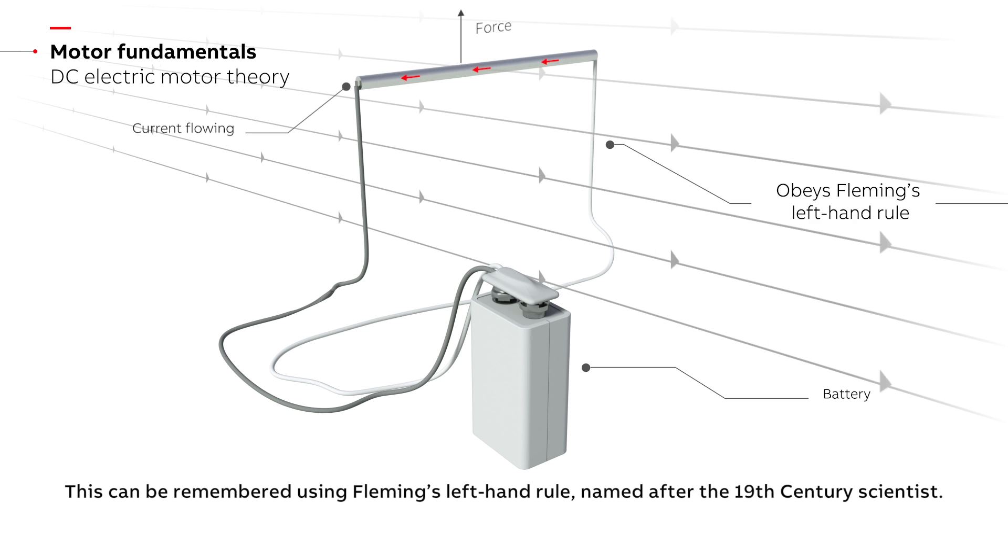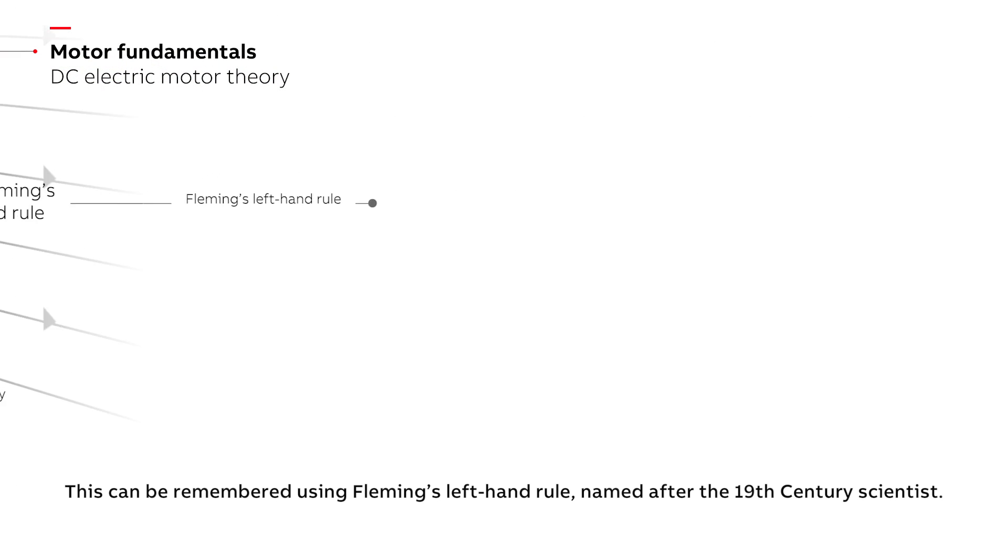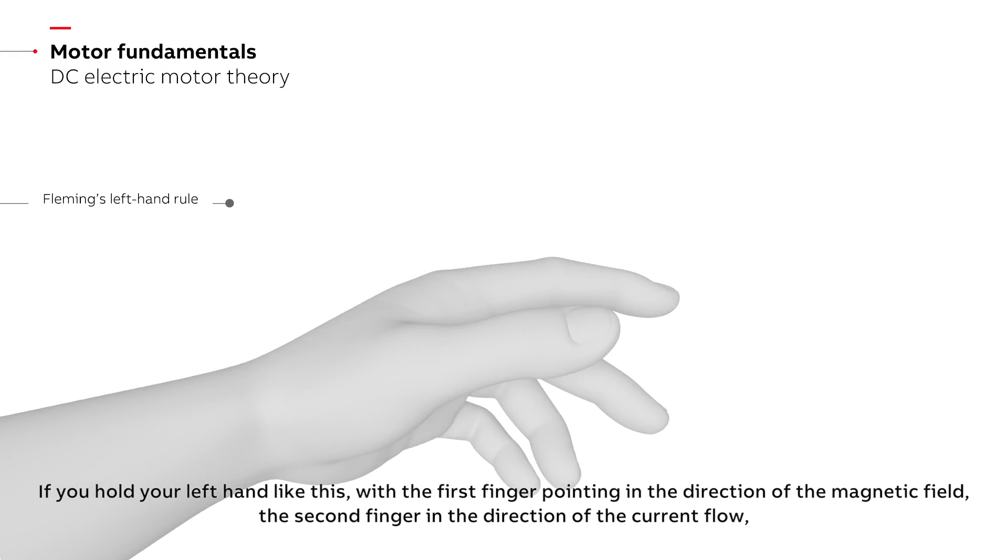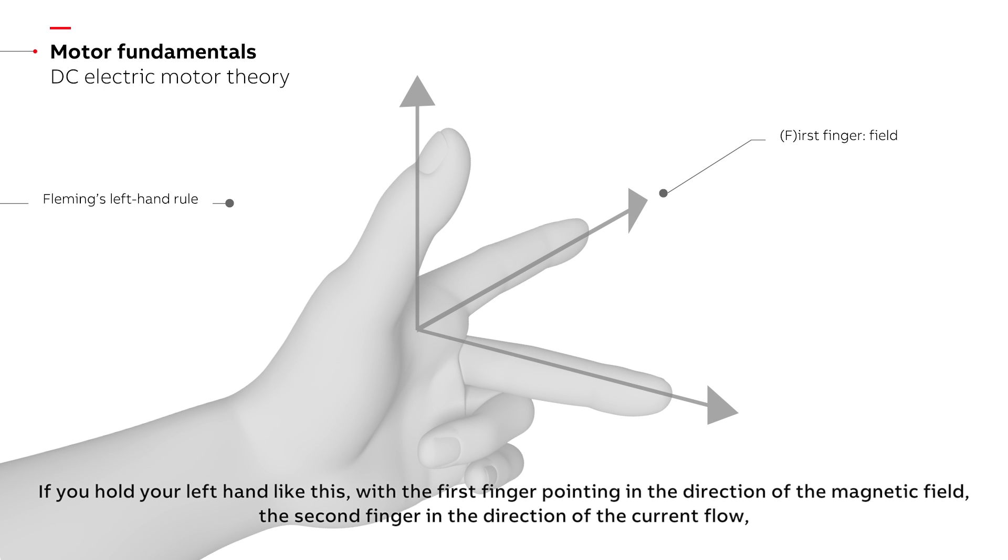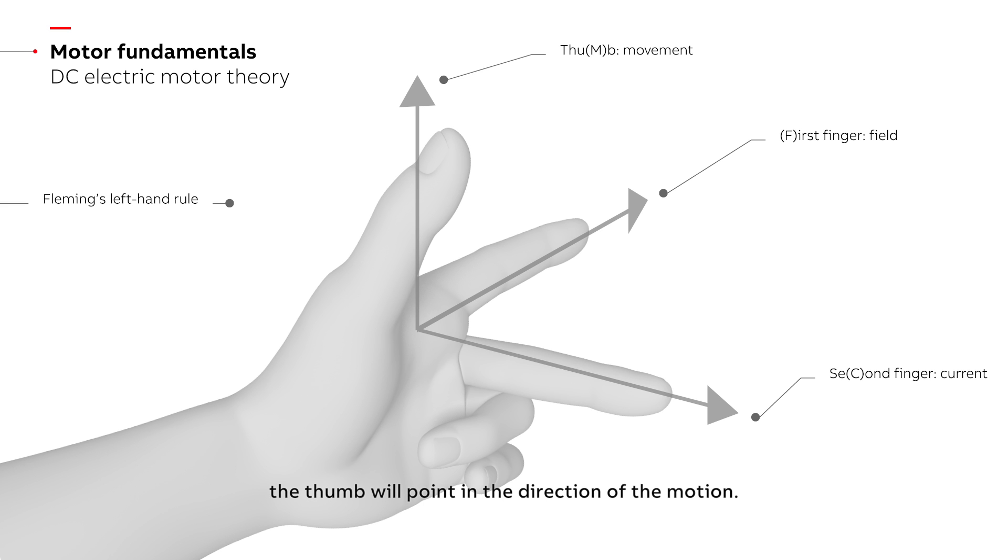This can be remembered using Fleming's left hand rule, named after the 19th century scientist. If you hold your left hand like this, with the first finger pointing in the direction of the magnetic field, the second finger in the direction of the current flow, the thumb will point in the direction of the motion.